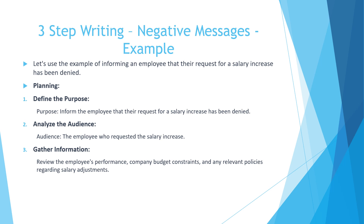Let's look at an example where you're informing an employee that their request for a salary increase has been denied. The planning phase would define the purpose — to inform the employee that their request for a salary increase has been denied. Analyzing the audience is the employee who requested the increase, and gathering information involves reviewing the employee's performance, company budget constraints, and any relevant policies regarding salary adjustments.